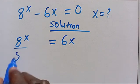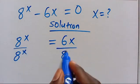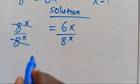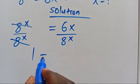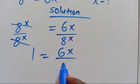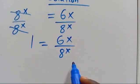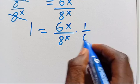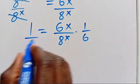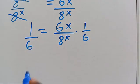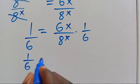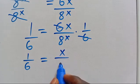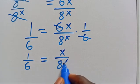Then let's divide by 8 to the power of x. From here this will cancel, and we have 1 equals 6x divided by 8 to the power of x. So let's divide this one by 6. We have 1 divided by 6 equals x divided by 8 to the power of x.